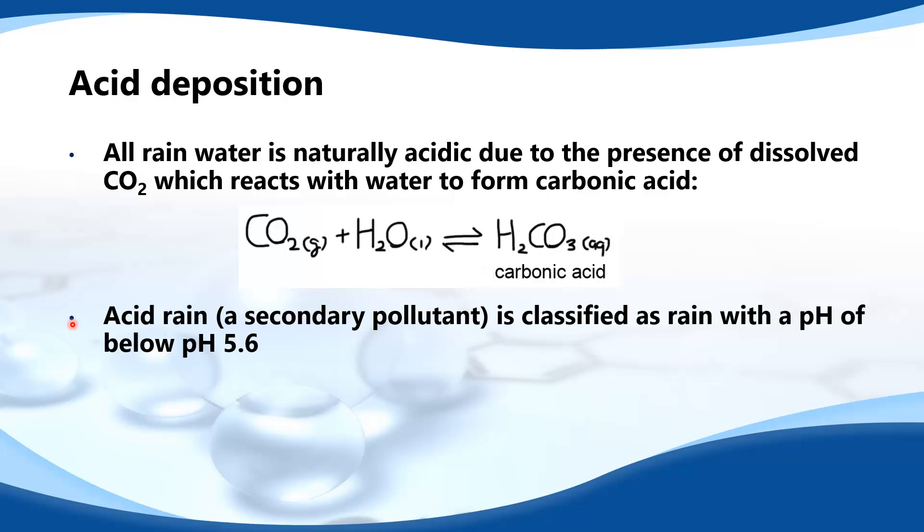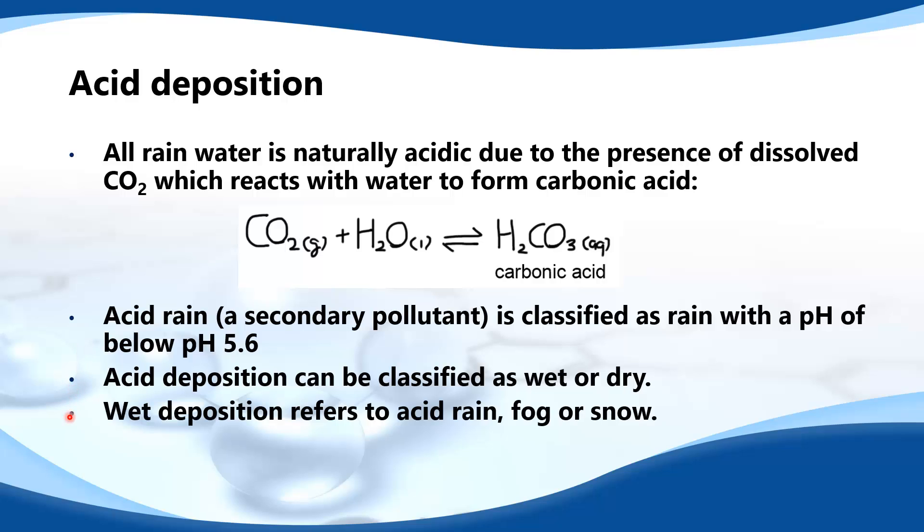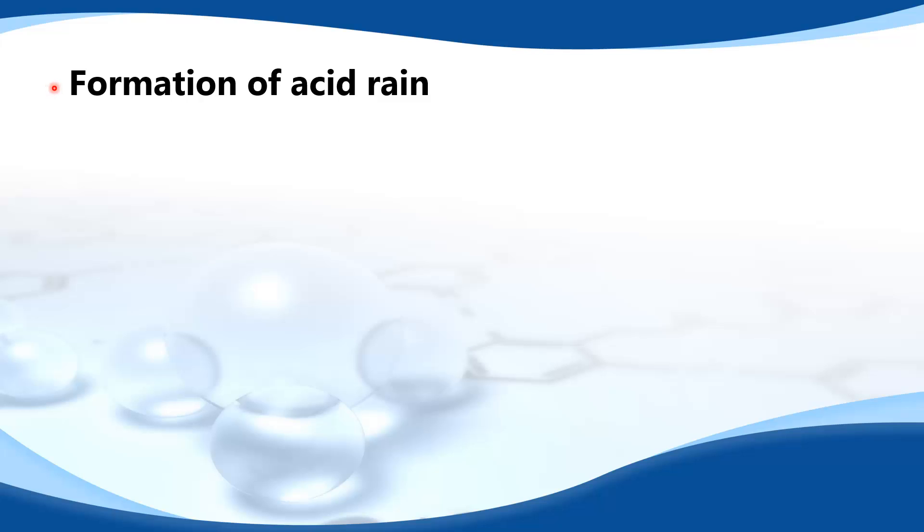Acid rain, which is a secondary pollutant, is classified as rain with a pH of below pH 5.6. Acid deposition could be classified as wet or dry. Wet deposition refers to acid rain, fog, or snow. Dry deposition refers to acidic gases and particles.